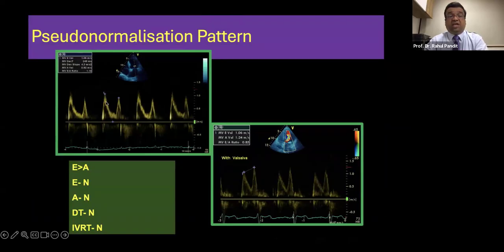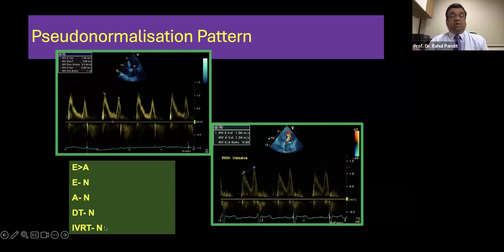Okay, so E upon A wave is maintained, but you may not have double the size of E wave. The E wave may still be less than double of the size of E wave. Plus you can see that rest of the things may completely appear normal.